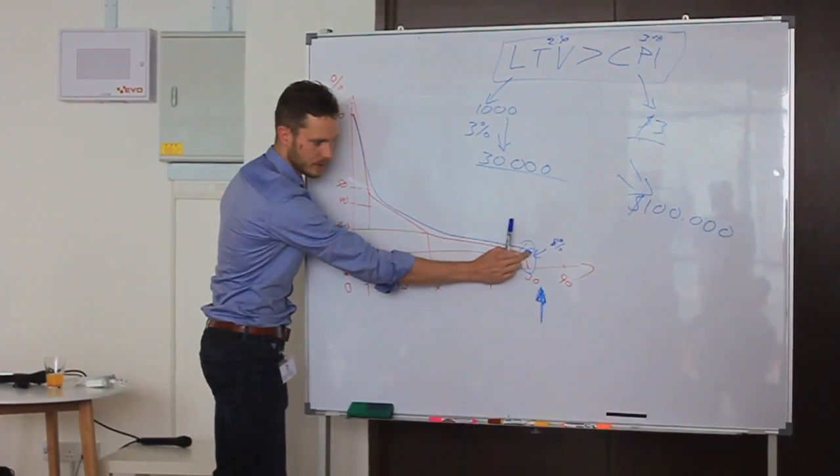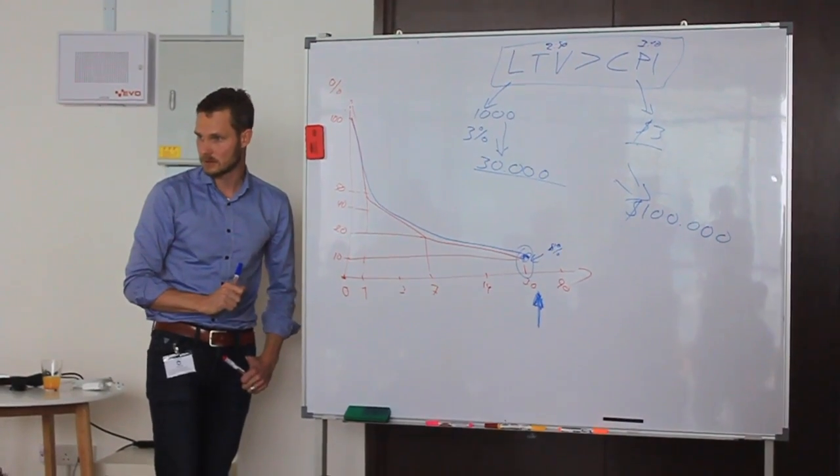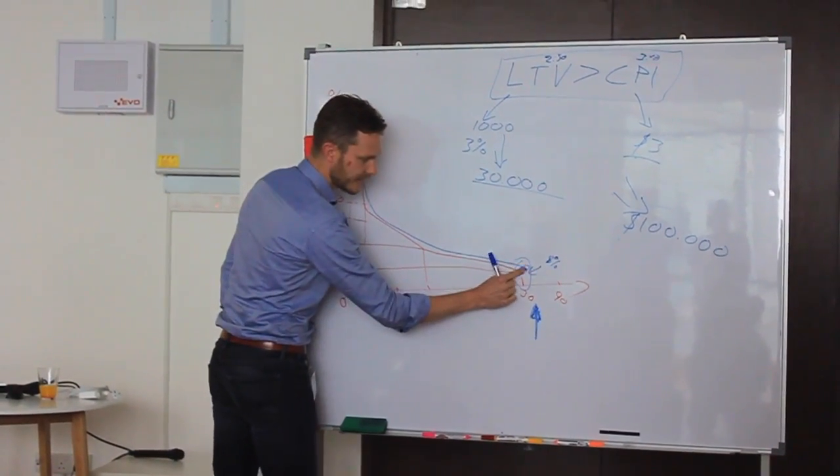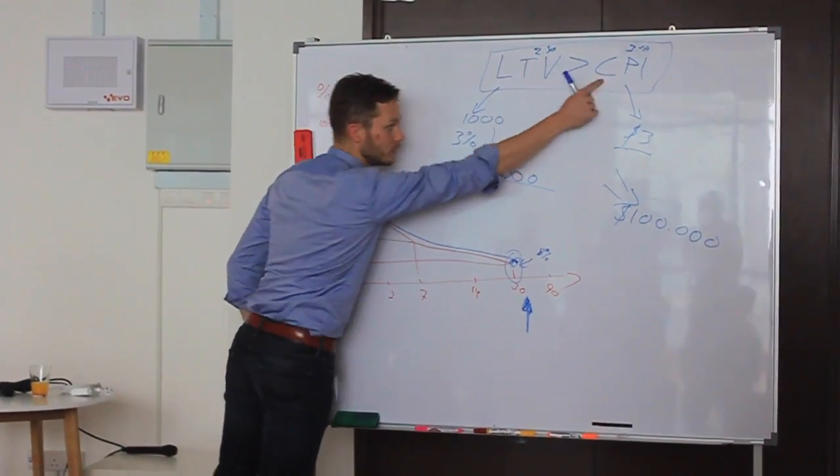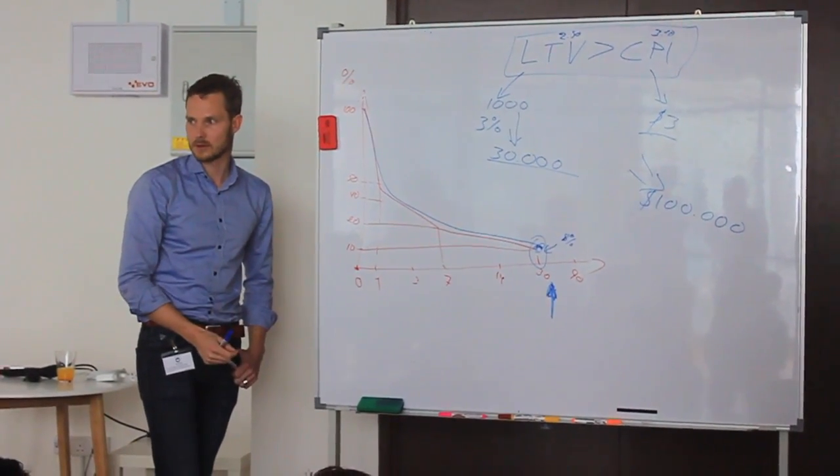Over there you are already having only 10% left of the people you started with in the best case. But going from that number to a good measurement of that one, you will need to spend probably a few hundred thousand.